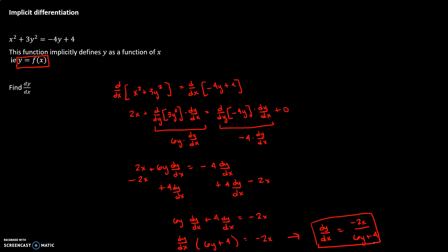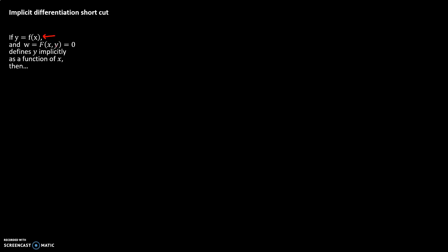That was our calc 1 implicit differentiation process, but now that we know how to do a chain rule for multivariable functions, we can find a shortcut. If we have y as a function of x defined implicitly, we create a new function capital F that has x and y in it, setting it equal to 0. This capital F of x, y equals 0 is our implicit equation.